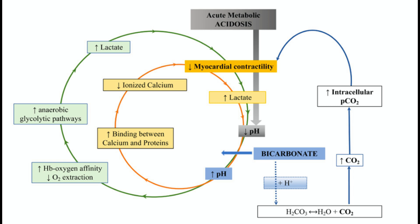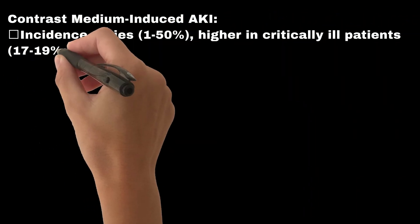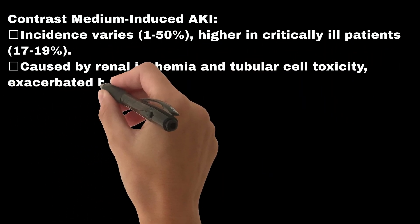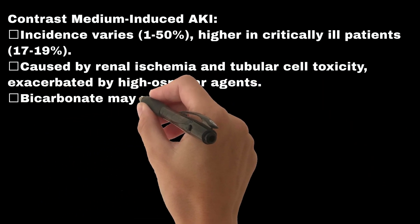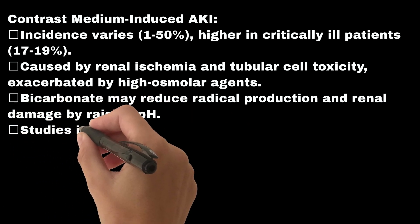There is a potential vicious circle: intended to correct acidosis, bicarbonate infusion may impair oxygen delivery and cardiac function. In some cases, however, bicarbonate stabilizes extracellular pH, providing temporary relief. Regarding contrast medium-induced AKI, incidence varies from 1–50%, higher in critically ill patients at 17–19%, caused by renal ischemia and tubular cell toxicity, exacerbated by high osmolar agents. Bicarbonate may reduce radical production and renal damage by raising pH.